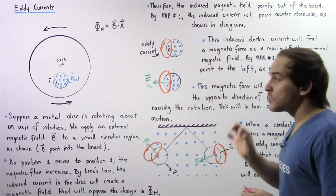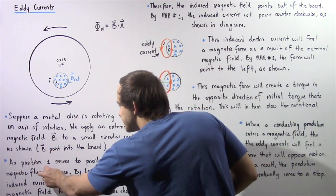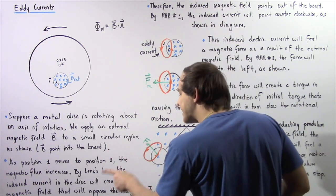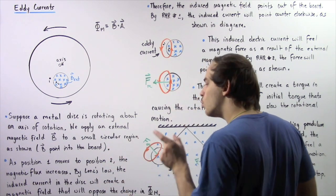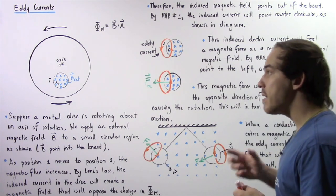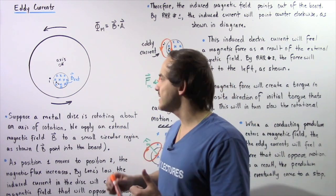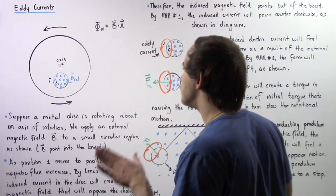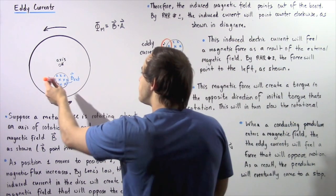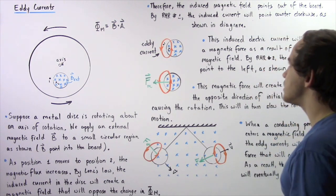By Lenz's law, we can determine the direction of those electric currents. As position 1 moves to position 2, the magnetic flux increases. By Lenz's law, the induced current in the disc will create a magnetic field that opposes the change in magnetic flux. Whenever there is an increase in magnetic flux, the induced magnetic field will point in the opposite direction compared to our external magnetic field. Therefore, the induced magnetic field will point out of the board — in the opposite direction of the external magnetic field B — creating that induced electric current.